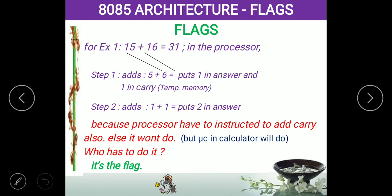Suppose I want to add two numbers — 15 plus 16. The answer is 31. In the processor, traditionally we add 5 plus 6 first. The answer is 11, so 1 is in the result and 1 is the carry. That carry value needs to be added to the tens digit. This is the standard addition operation — the carry from one digit must be passed to the next.